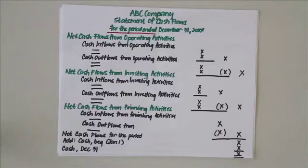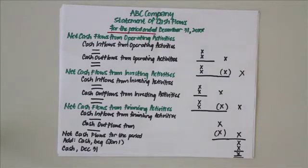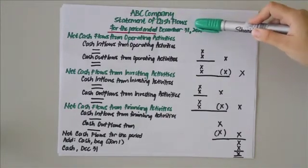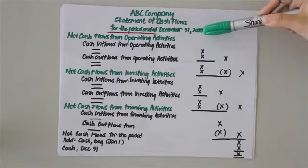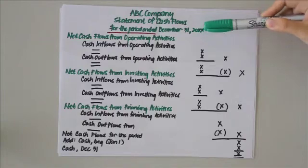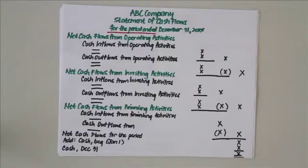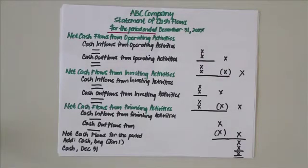Now that you know how to categorize transactions, you're ready to prepare your own statement of cash flows. Here is a sample statement. You first start with the heading — many students forget this, which could cost points on an exam. Put the company name, the type of statement (statement of cash flows), then the date: for the period ended December 31, 2014. We use 'for the period ended' because we're accounting for transactions throughout a whole period, the same as for the income statement and the statement of changes in owner's equity.